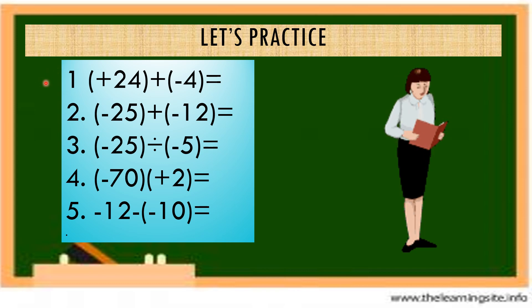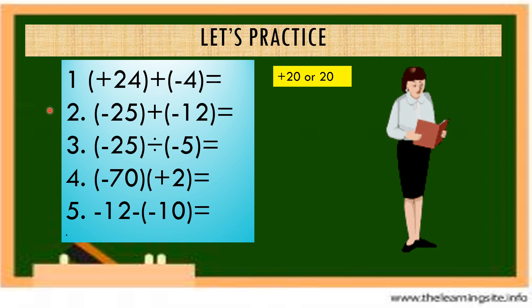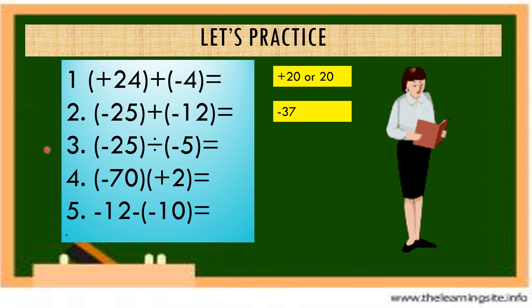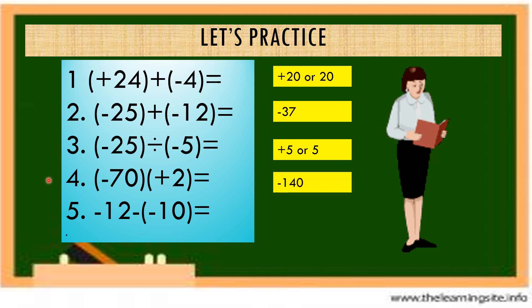Number 1: positive 24 plus negative 4. The answer is positive 20. Number 2: negative 25 plus negative 12. The answer is negative 37. Number 3: negative 25 divided by negative 5 — the quotient of two integers having like signs — the answer is positive 5. Number 4 uses multiplication — the product of two integers having unlike signs — the answer is negative 140. Number 5 uses subtraction — change the sign of the subtrahend and proceed to addition — the result is negative 2.